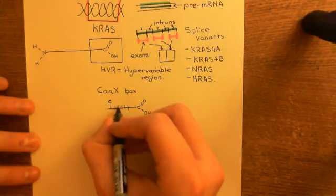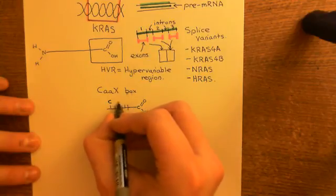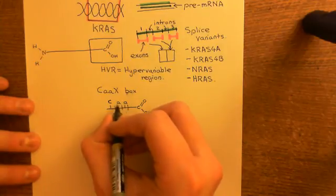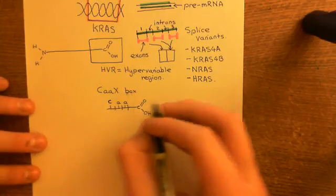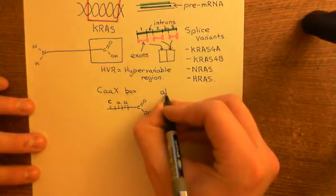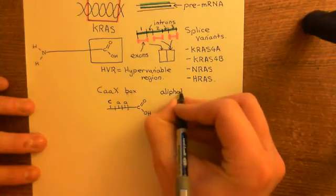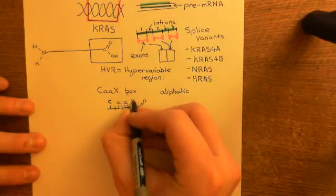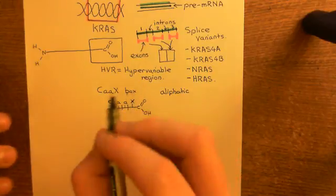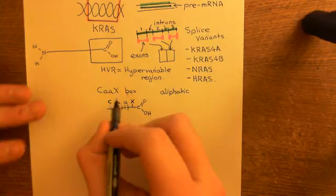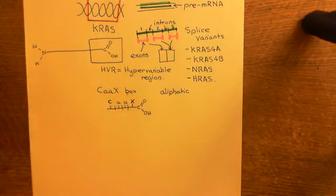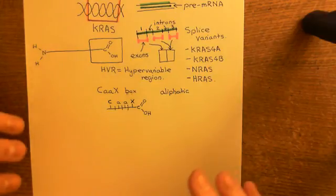In the third and second positions in from the end, they then have what are known as aliphatic amino acids — the 'A' does not stand for alanine but for aliphatic. And then in the final position they have an X amino acid. This CAAX box is going to be important because this is where we're going to farnesylate the polypeptide.